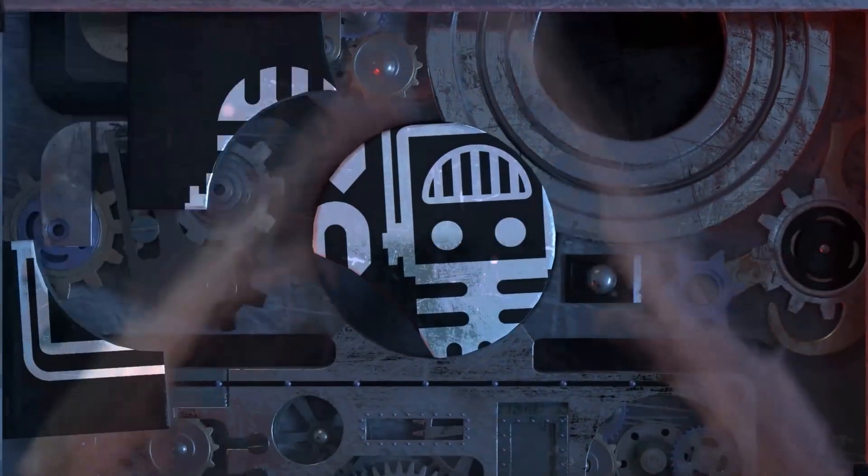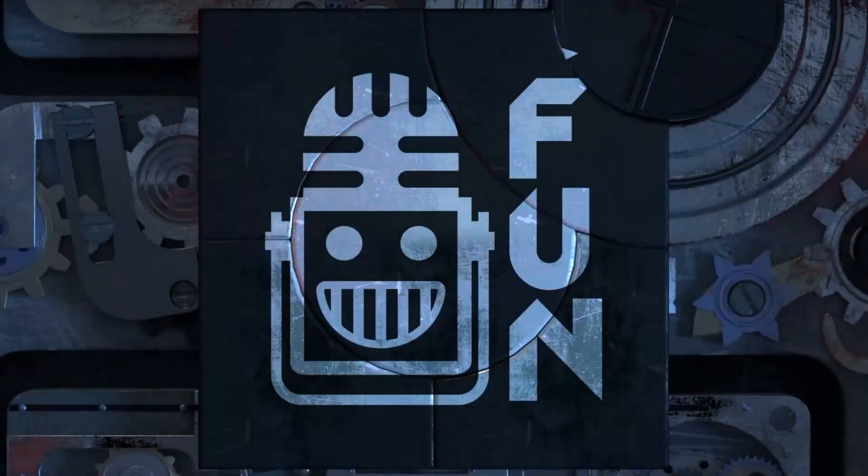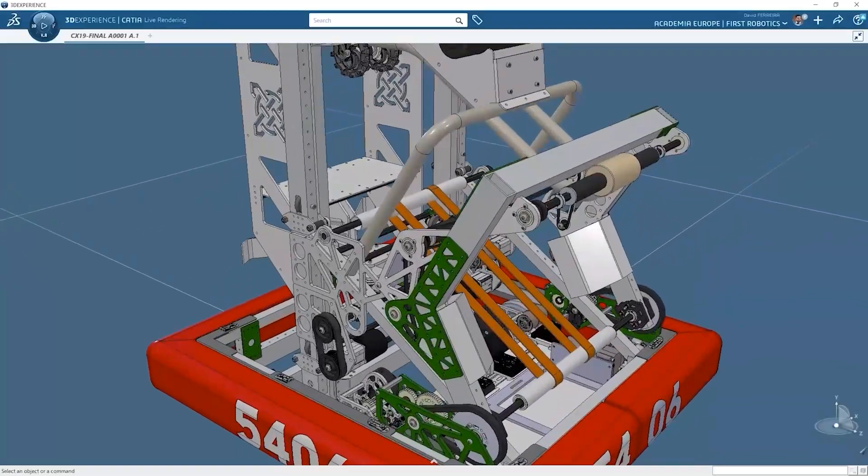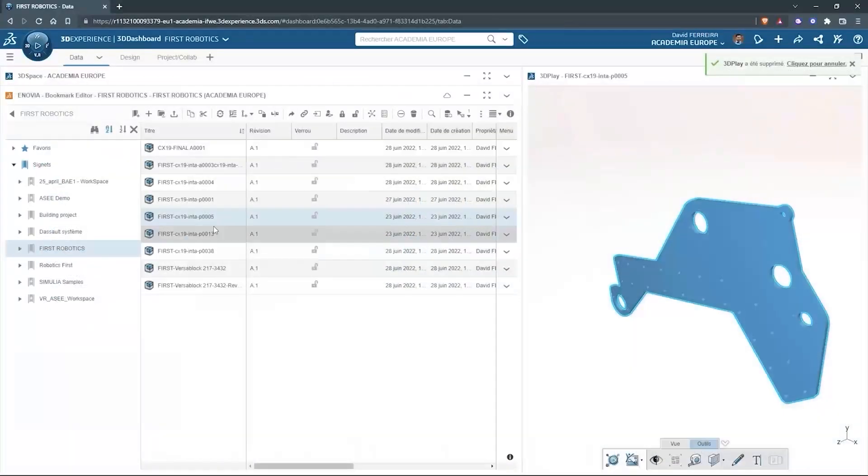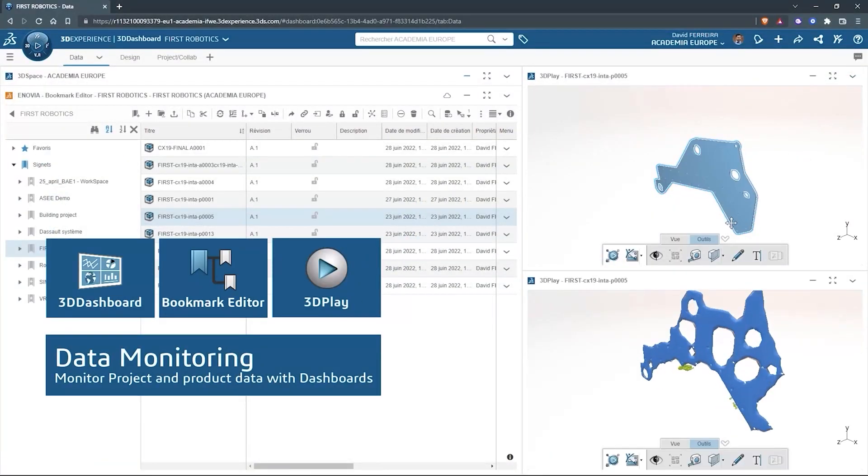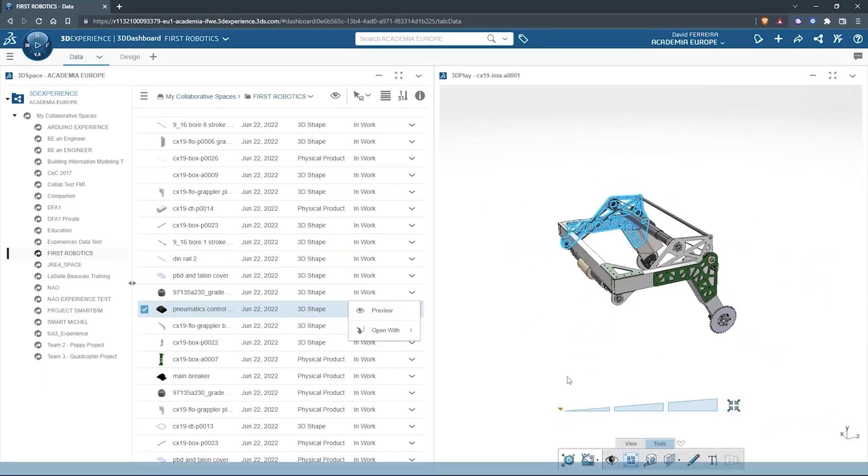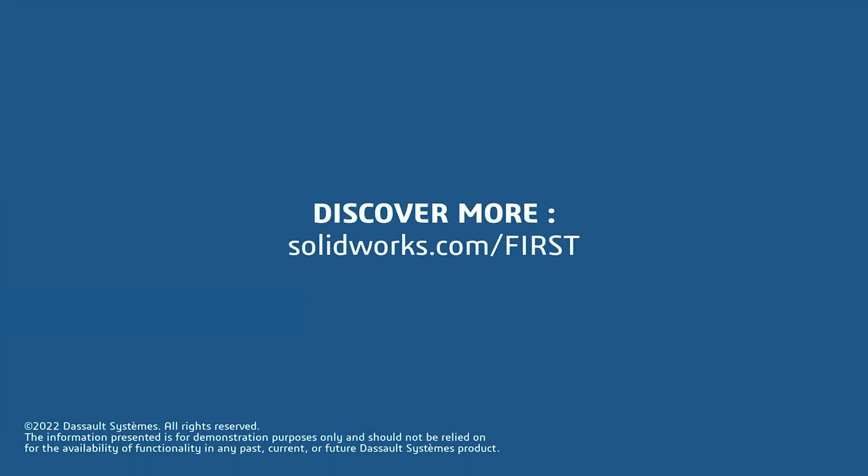This video on First Updates Now is made possible by viewers like you and also the following sponsors. SolidWorks is free for FIRST teams. Over 80 percent of U.S. engineering schools and 370,000 plus companies use SolidWorks to design great products. SolidWorks can help you design a great robot on desktop or on the cloud. Go to solidworks.com slash FIRST to register your team.